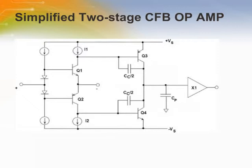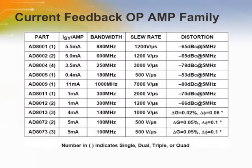The current sources keep the amplifier's quiescent power low, yet are capable of supplying current on-demand for wide current excursions required during fast slewing. The AD8011, AD8001, AD8002, AD8004, AD8005, AD8009, AD8013, AD8072, and AD8073 are in this family.